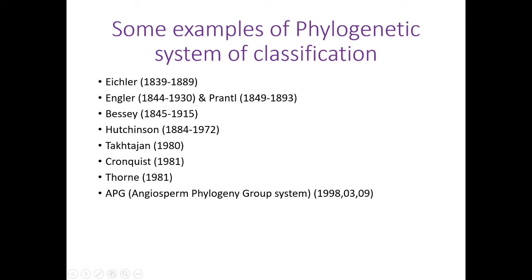Now, these are some examples of phylogenetic classification systems. First of all, Eichler, whose lifespan was 1839 to 1889. The second best example is Adolf Engler and Karl Prantl. Then third, Bessey; next, Hutchinson; then Takhtajan; Cronquist; Thorne; and lastly, the recent APG. The full form of APG is Angiosperm Phylogeny Group system, which has been published in three periods.